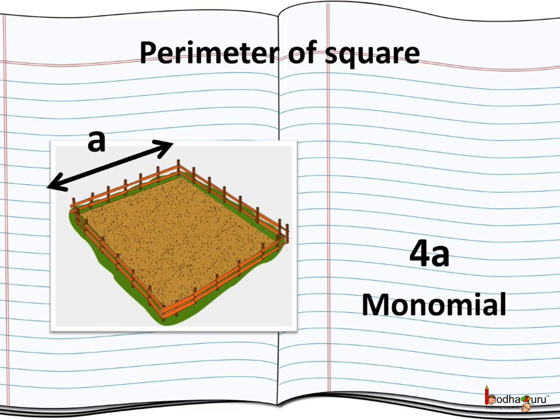Like the expression with single term is called a monomial. Mono means 1. So here the perimeter of square is 4 multiplied by side, or we can say 4a when the side is a units. Here 4a is only one term.